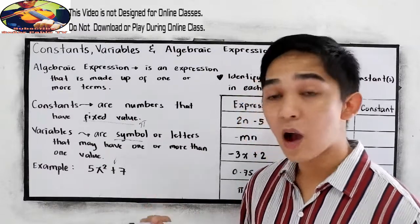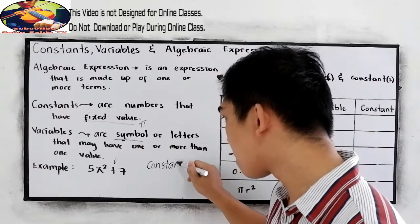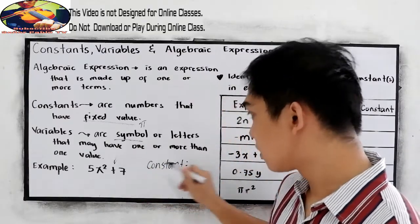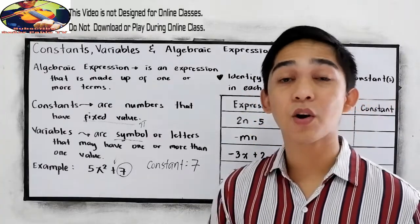In this case, our constant is the fixed value. Our fixed value is 7. That is our constant.